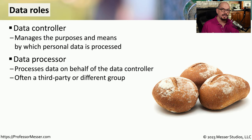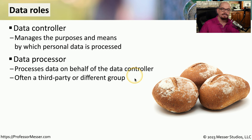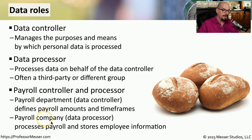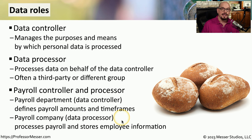Many organizations also have data controllers and data processors. The data controller is responsible for managing how this data is used, and the data processor is the person actually using the data. The data processor may be internal within your organization, or you may be using a third party. For example, the payroll department would be the data controller — they define how much people get paid and when. They then hand that information off to a third-party payroll company that actually processes everyone's paychecks. This means a great deal of private data is transferred between the data controller and data processor, and a company might use a non-disclosure agreement to ensure all of that information remains private.